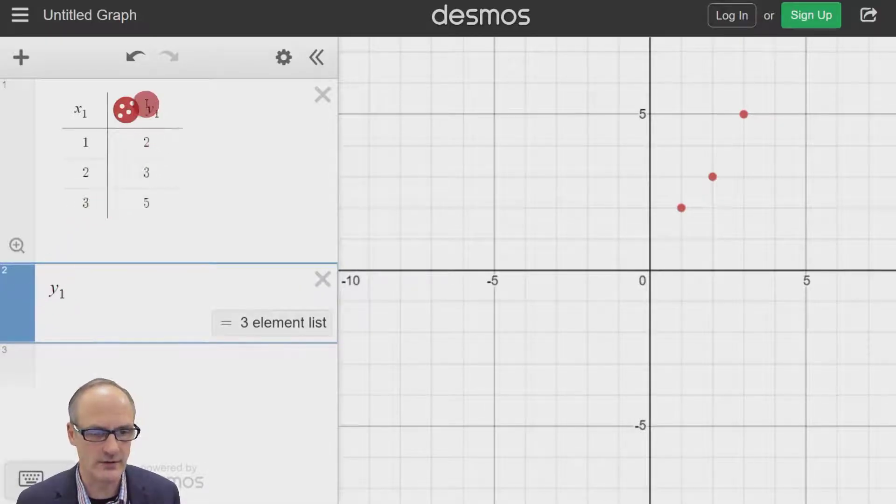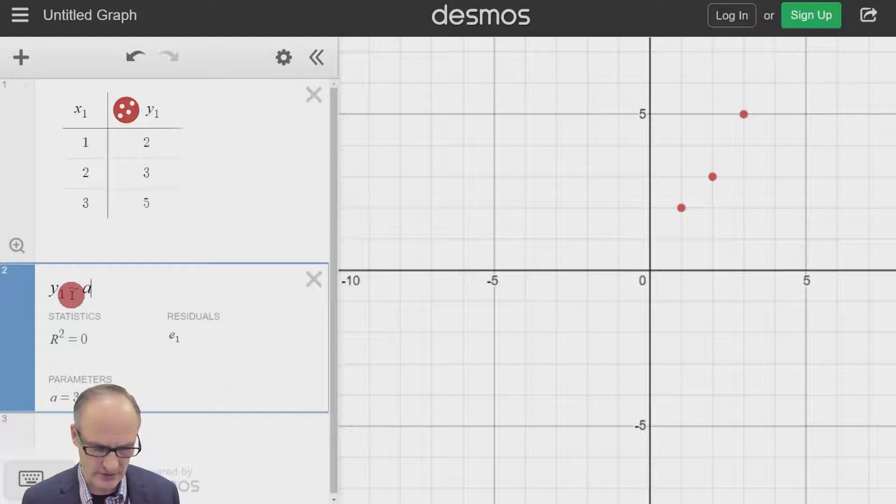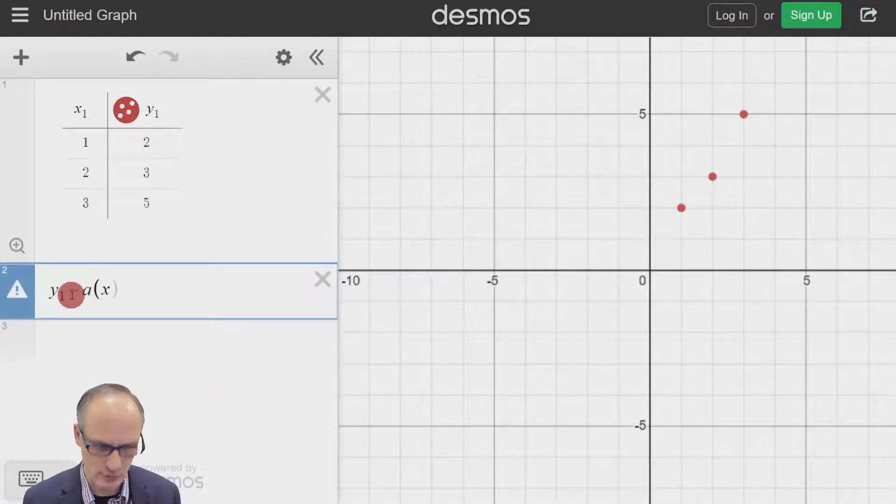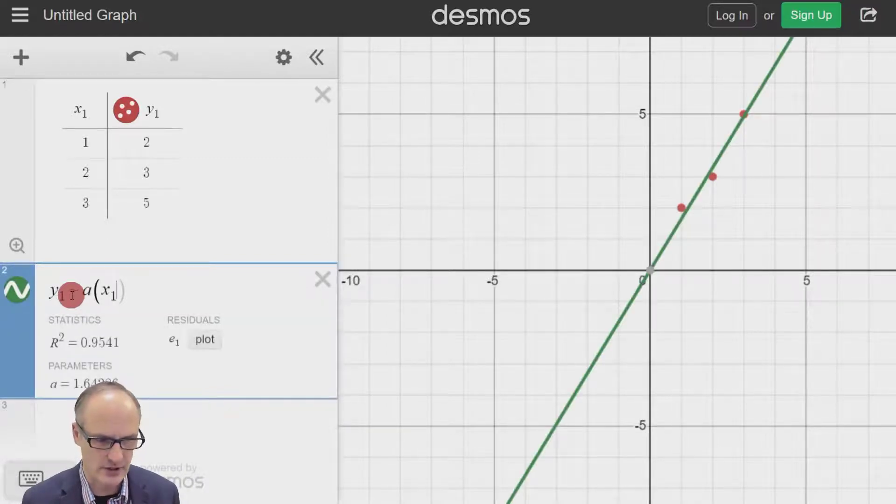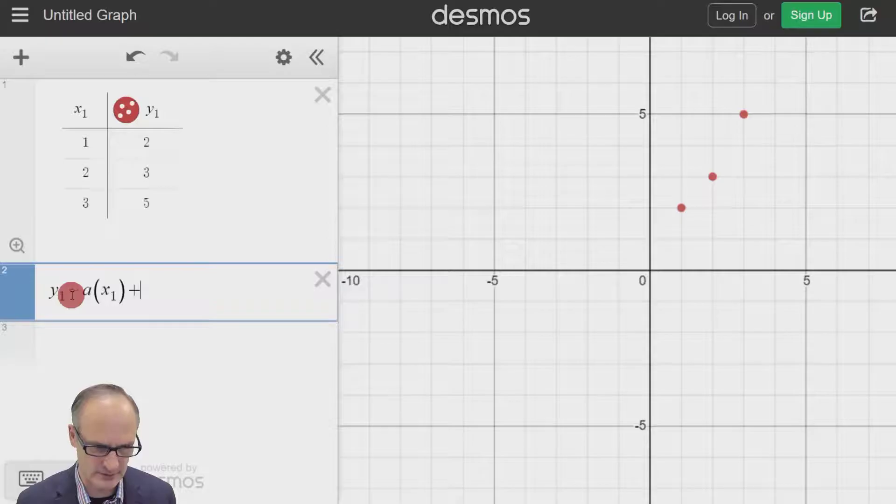What we do is we type in Y1 to represent Y values and we use a tilde instead of an equal sign to make this function work. And then what we're going to do, if we're doing a line of best fit, is make sure all the X values, the X1s, are put in brackets. Now it's already trying to do a line of best fit through this, which doesn't have a plus C in it. So we can put a plus C.